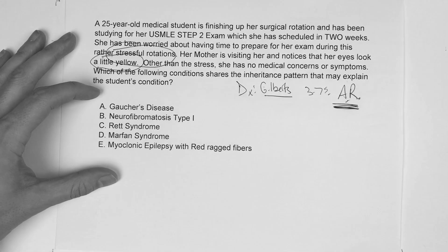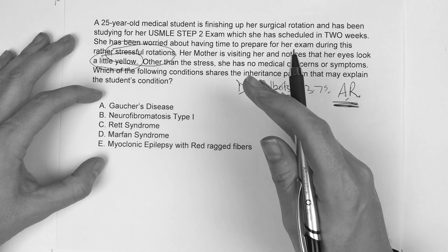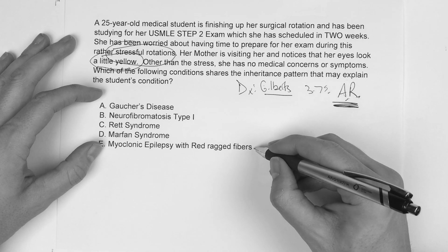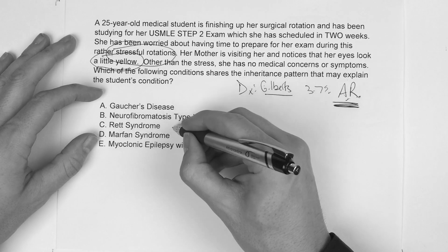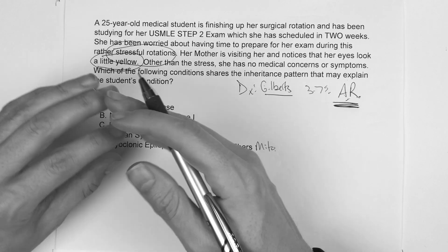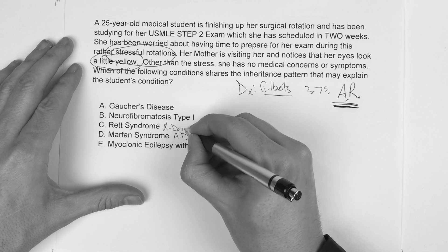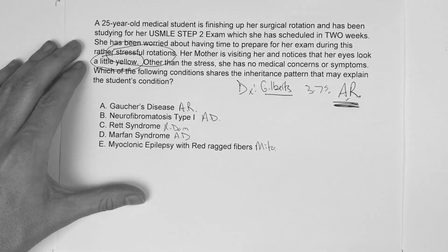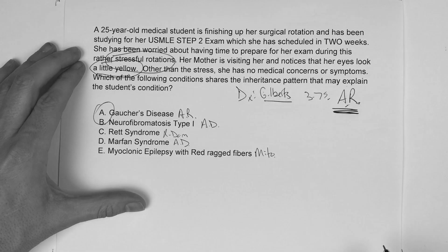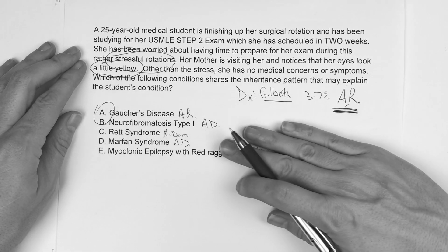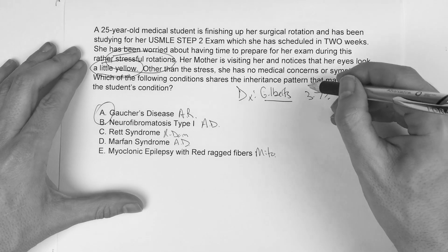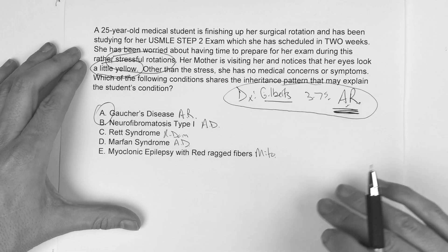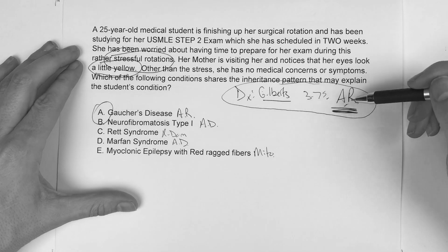Which answer choice is also autosomal recessive? Myoclonic epilepsy is mitochondrial. Marfan's is autosomal dominant. Rett syndrome is X-linked dominant. Neurofibromatosis is autosomal dominant. Gaucher's disease is autosomal recessive — that's the connection. Review the genetics videos and you'll be able to identify the correct pedigree or inheritance pattern.